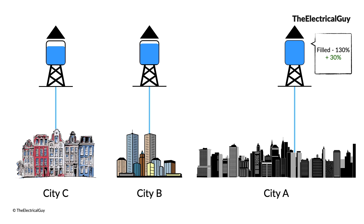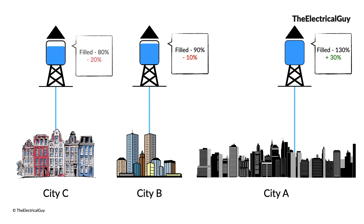For City B, the tank is filled 90%, meaning City B has 10% less water than what it needs. For City C, the tank is only filled 80%, so City C has 20% less water than what the city needs. Looking at this situation, City B and City C have a deficiency of water whereas City A has 30% more water than what the city needs.